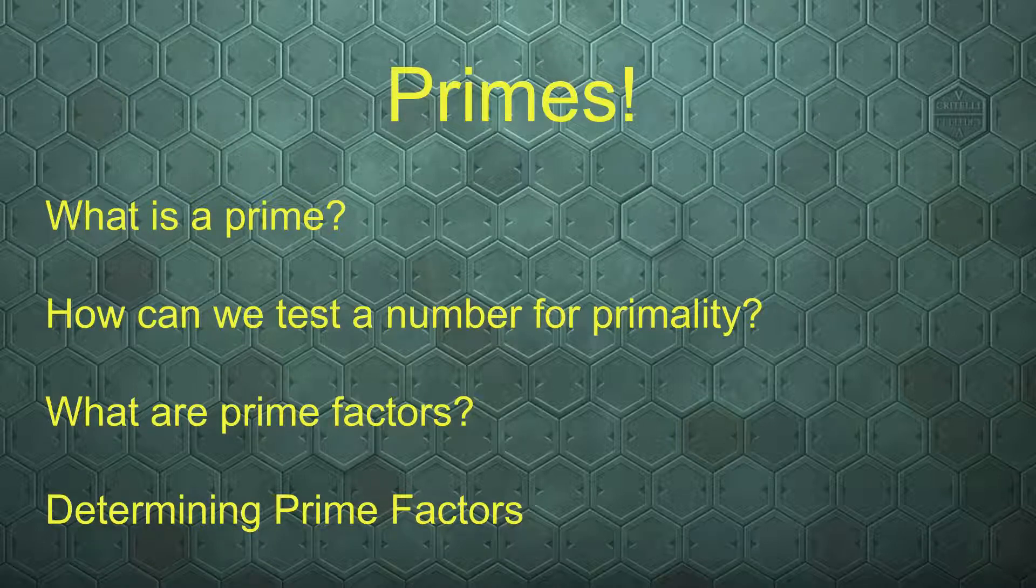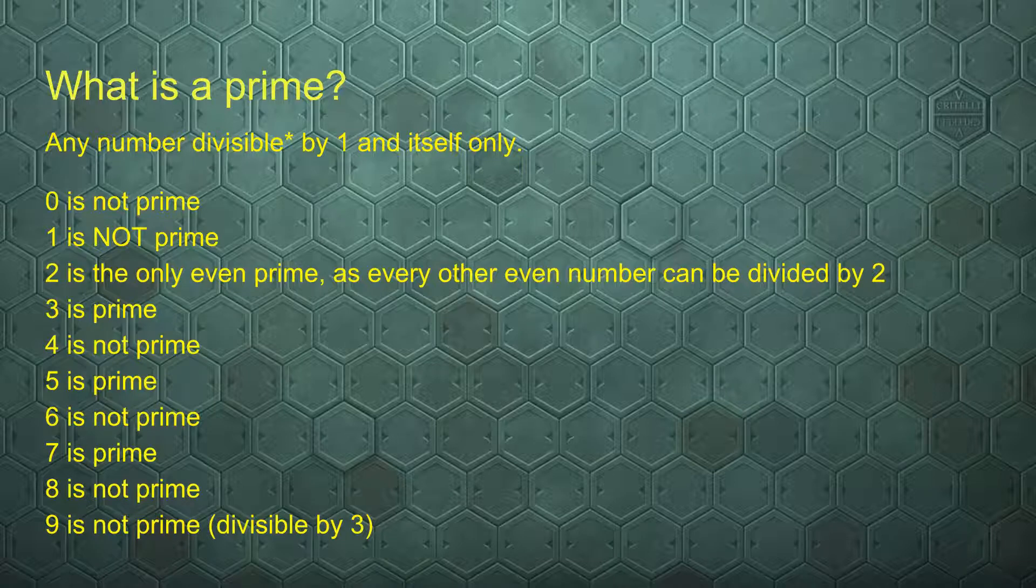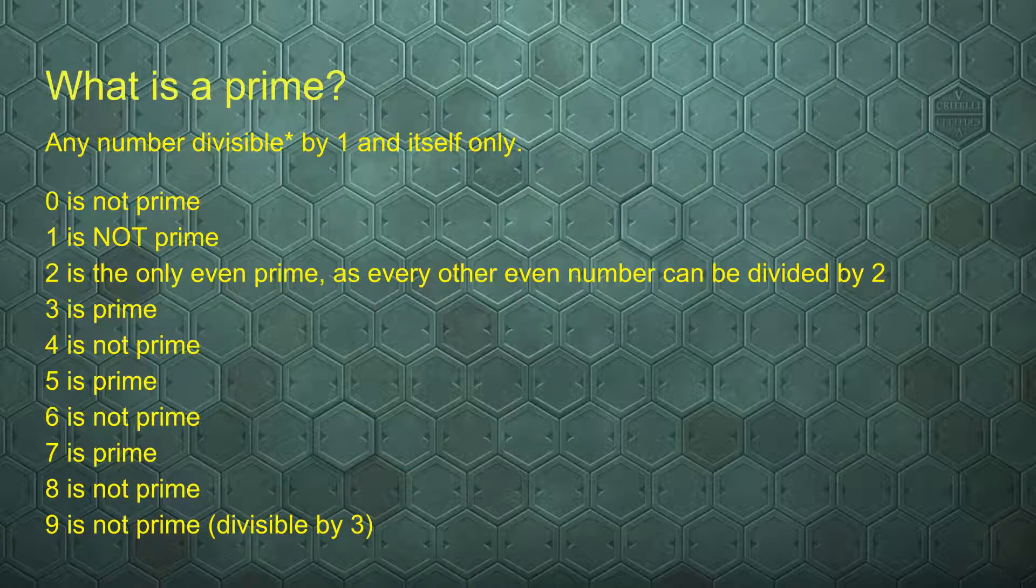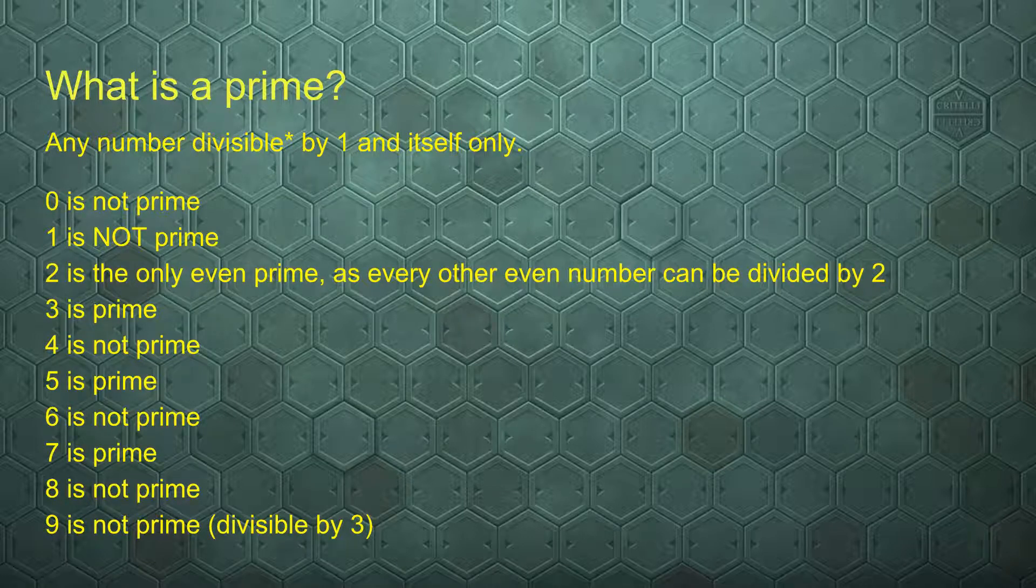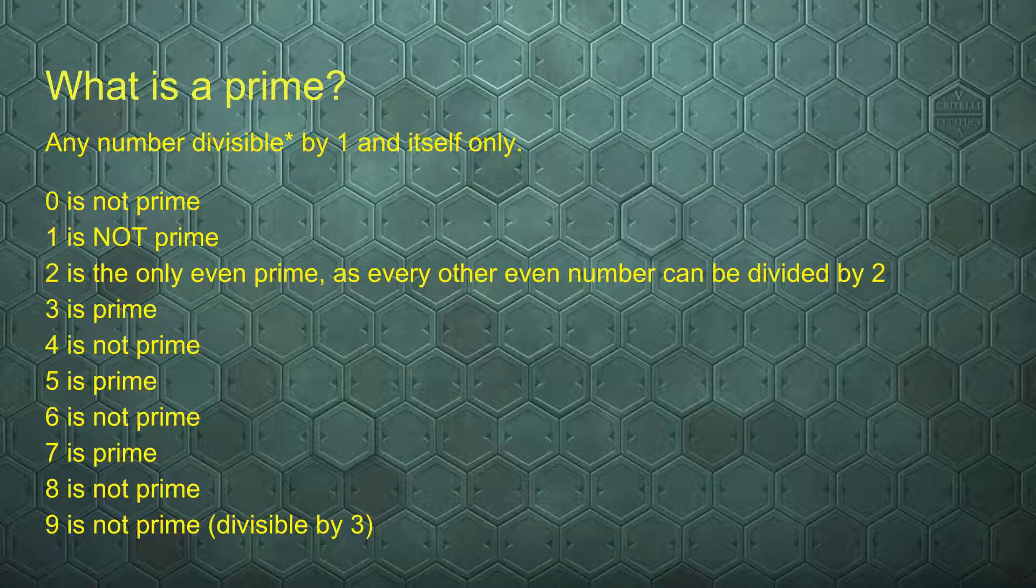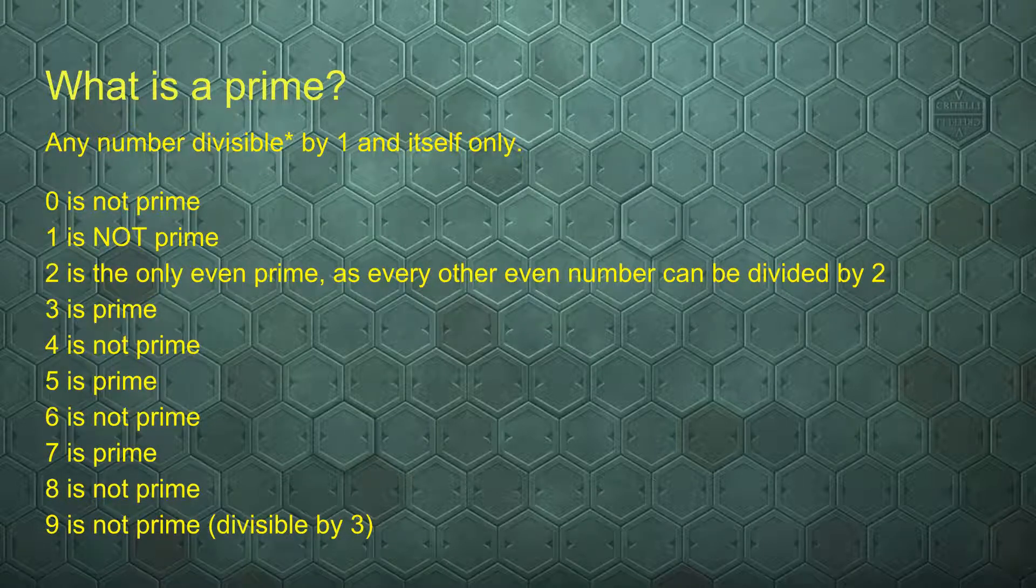What is a prime? Any number divisible by 1 and by itself only. 0 is not a prime, 1 is not a prime, although 1 itself does comply to this rule. It's divisible by 1 and by itself, but it's not considered prime by mathematicians.